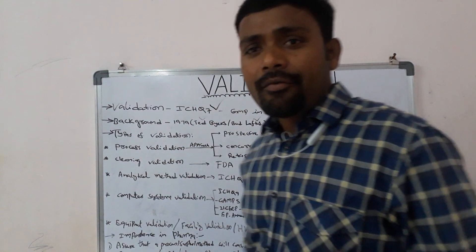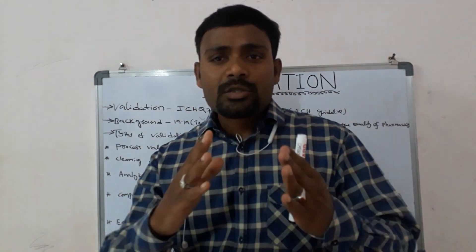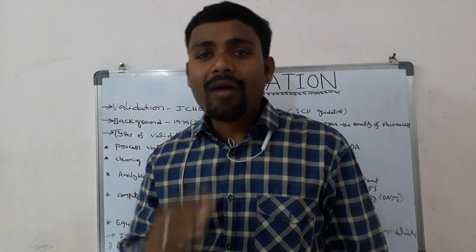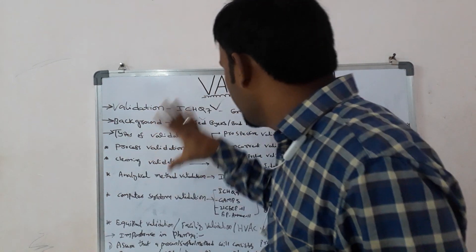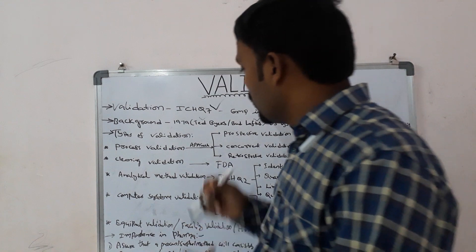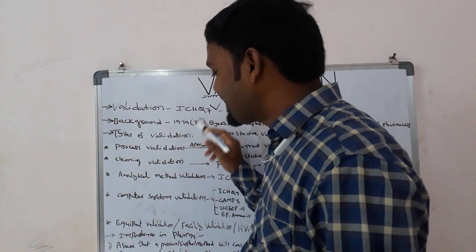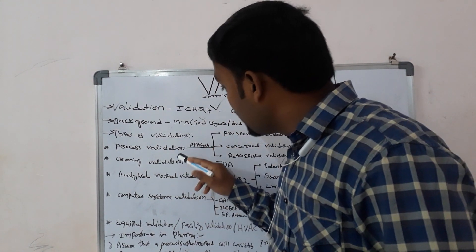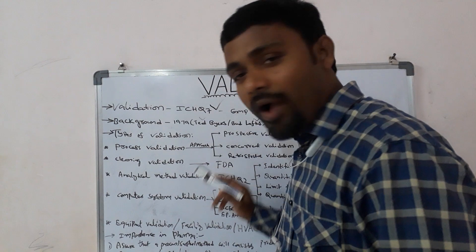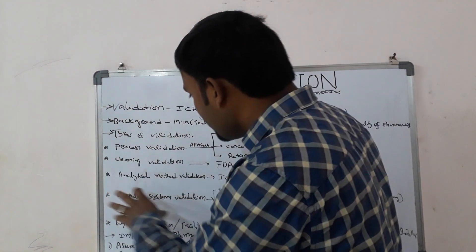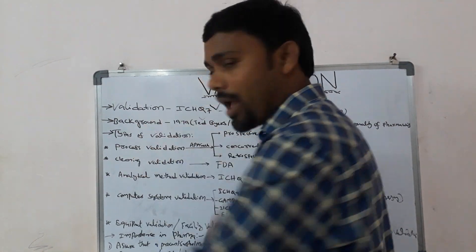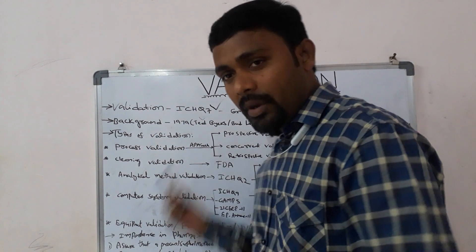Since a wide variety of systems, processes, and activities need to be validated, validation is classified into subsections: process validation, cleaning validation, analytical method validation, and computer system validation. These are the four major categories of validation, and we will discuss each one by one.